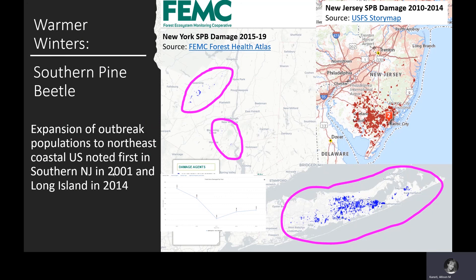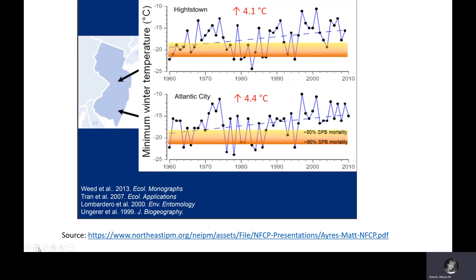In 2001, there was an outbreak of southern pine beetle in southern New Jersey, with several years of impact through 2014. In 2014, the insect was found causing damage in Long Island, New York, and in later years in other portions of southern New York. This slide from Matt Ayres out of Dartmouth illustrates how winter temperature extremes impact southern pine beetle — mortality occurs at temperatures below negative 20°C for 90% of the population — and those extreme low winter temperatures were not occurring in New Jersey prior to the 2001 outbreak detection.